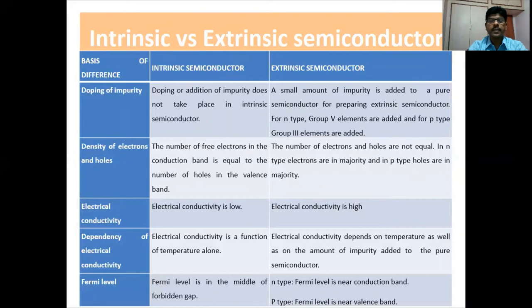The next difference is in terms of Fermi level. In intrinsic semiconductors, the Fermi level is in the middle of the forbidden gap. Whereas, in extrinsic semiconductors, in N-type, the Fermi level is near the conduction band, and in P-type, the Fermi level is near the valence band.